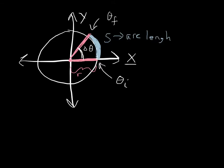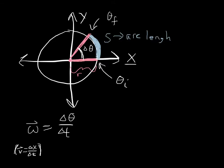So delta theta is my angular displacement. My omega, by analogy to velocity — where velocity is change in x over change in t — I replace change in x with delta theta (angular displacement) over change in time. Since velocity is a vector, angular velocity is also going to be a vector.